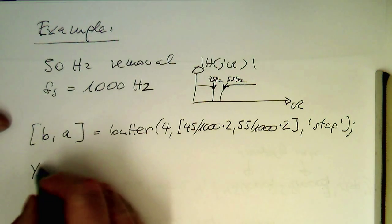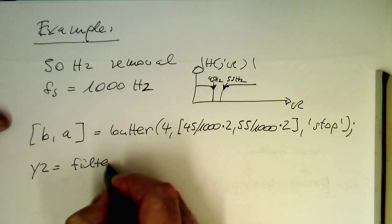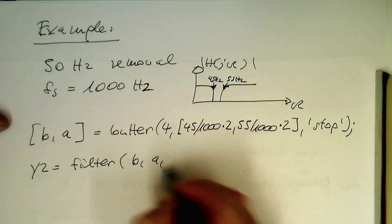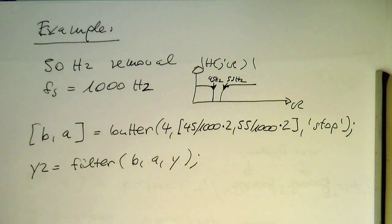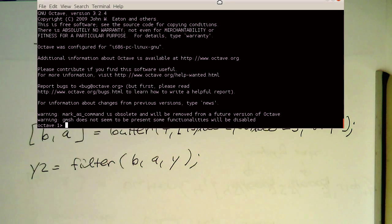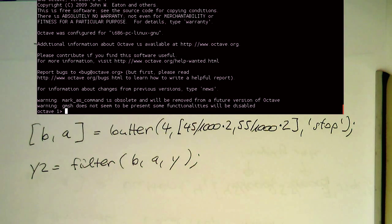And then with that we can filter B, A, Y and then we have it removed with that. So we just need to put this into action. So let's move this here a bit up that we see that. So B, A and then butter 4, 45 divided by 1000, Matlab convention, 55 divided by 1000 multiplied by 2 for the Matlab convention. And then stop.